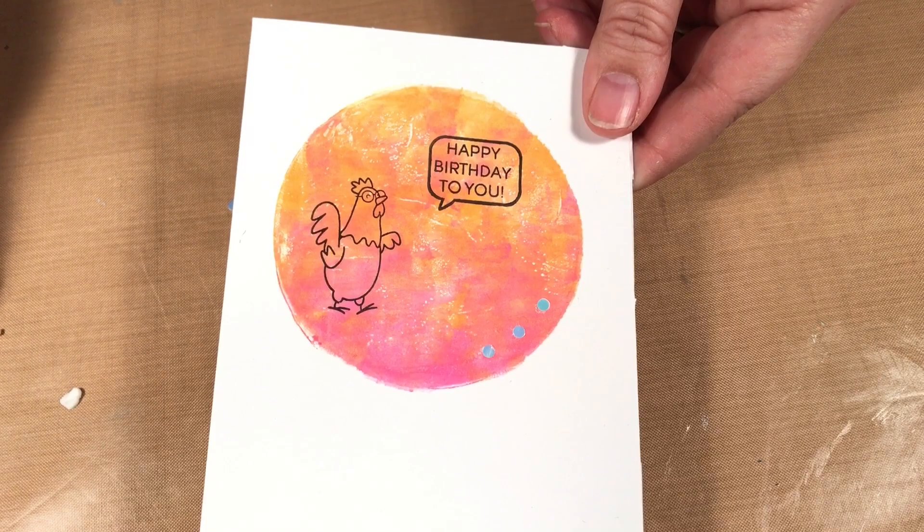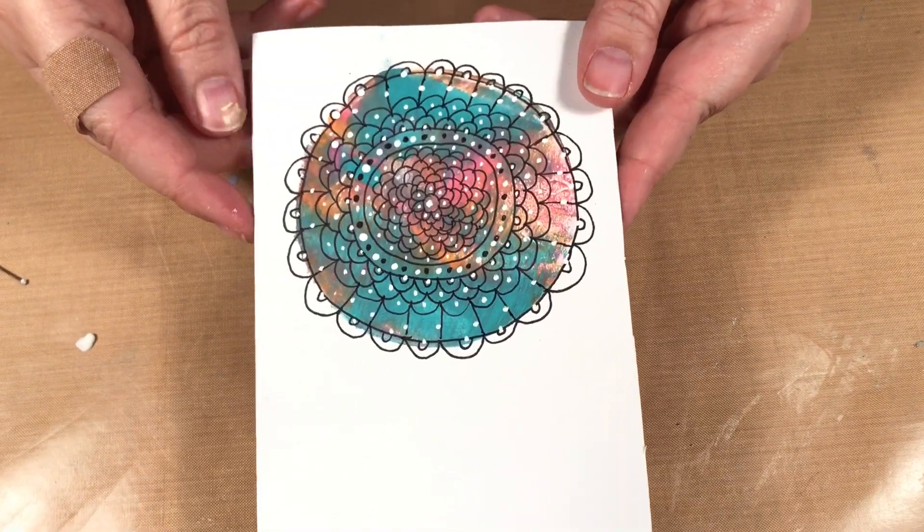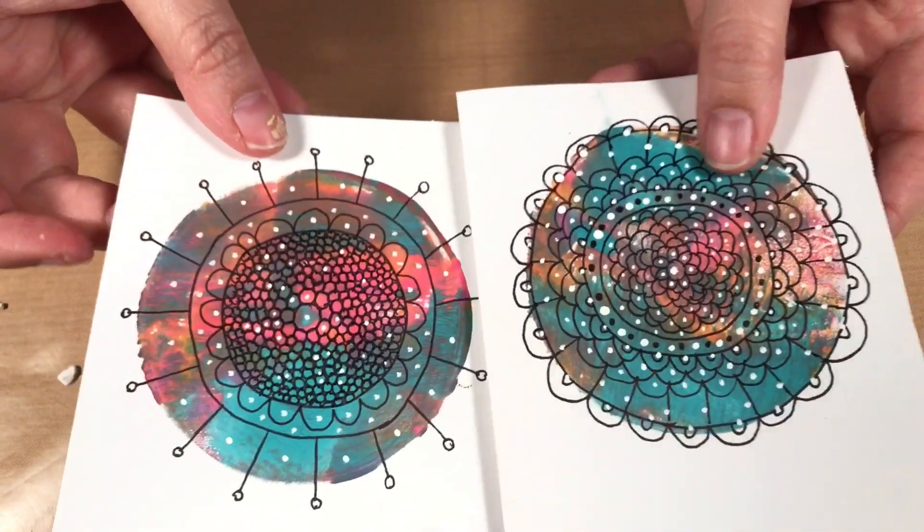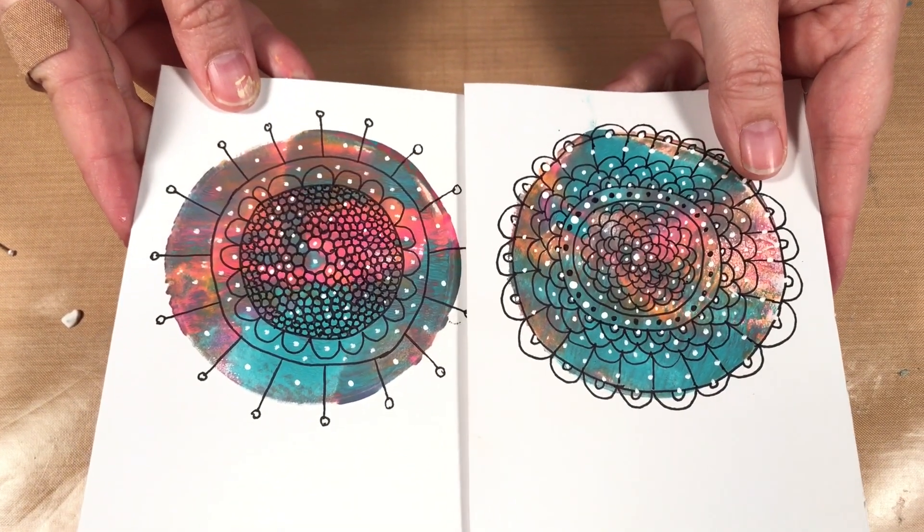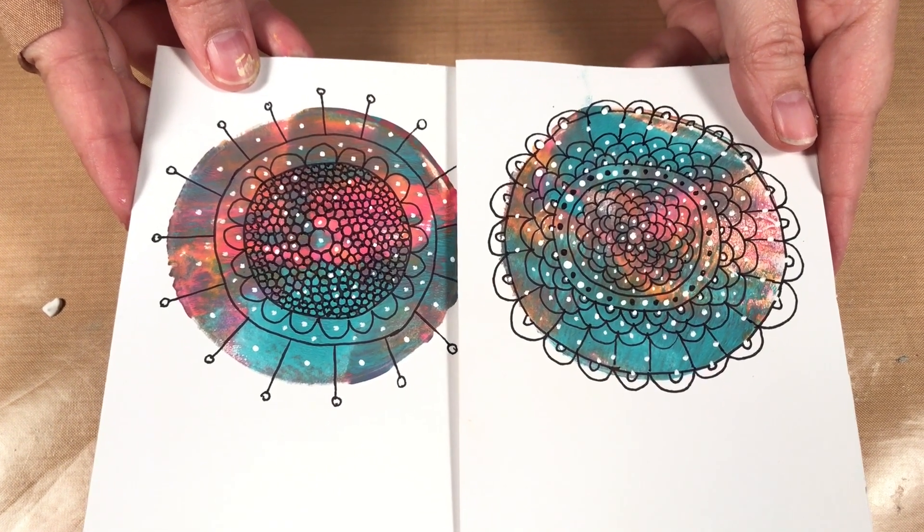I just want to show you one other thing. With the circles you can also use them just to doodle on. Here I doodled a couple flowers, so you don't have to just stamp on them. You can use circles for lots of different things.